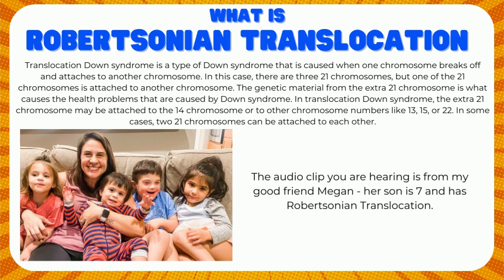When we got his official chromosomal type — the carrier type — it was a couple of weeks after he had been diagnosed in the hospital. I got a phone call saying it was Robertsonian translocation. All that meant was that the extra little chromosome was attached to chromosome 14. Usually it's chromosome 14, and then either 15 or it could just be attached back onto 21.